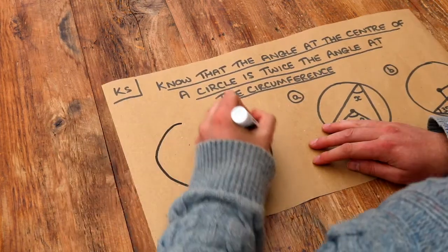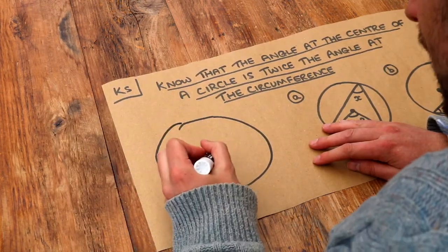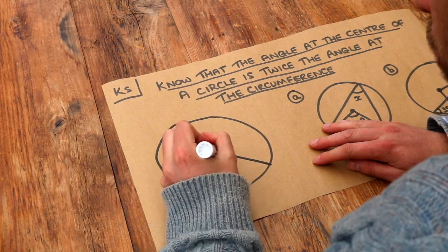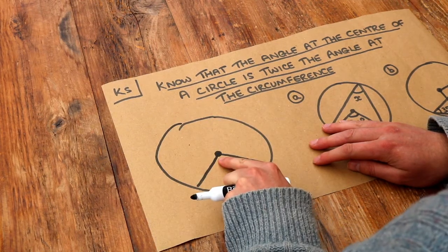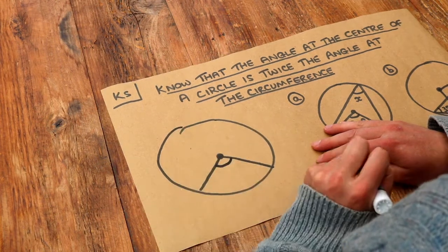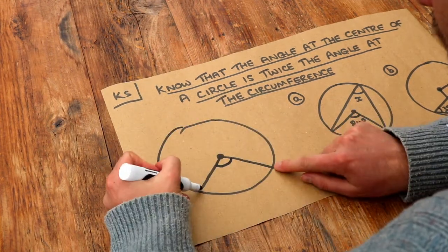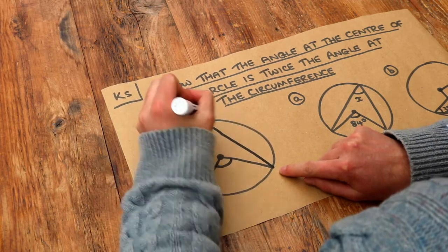This theorem states that if we have an angle between two lines where the angle is at the centre of the circle, and from the ends of those two lines we join them to a point on the circumference,